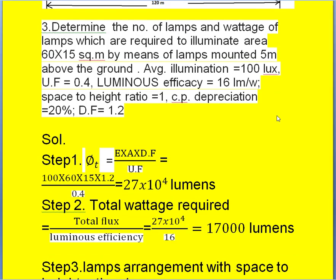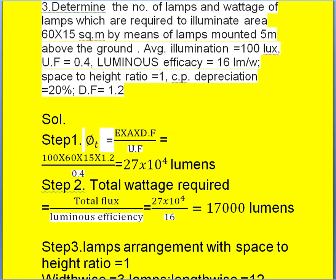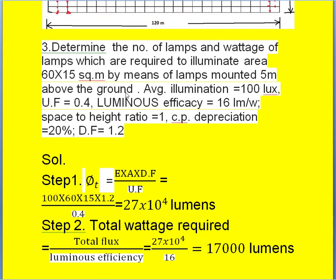Now the third problem: determine the number of lamps and wattage of lamps required to illuminate an area of 60 by 15 square meters with lamps mounted 5 meters above the ground. Average illumination is 100 lux. Utilization factor is 0.4. Luminous efficacy is 60 lumens per watt. Space-to-height ratio is 1. Candle power depreciation is 20 percent and the depreciation factor is 1.2.